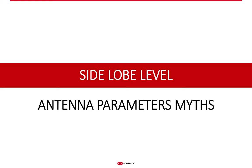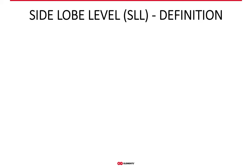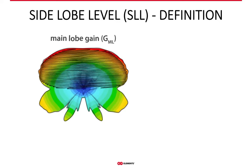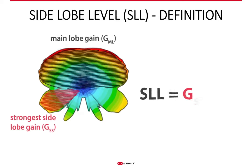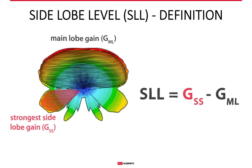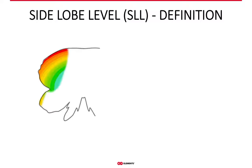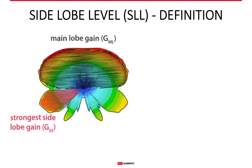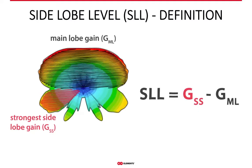Another parameter worth mentioning is side lobe level. In practical life, its effect is similar to that of front-to-back ratio. Side lobe level is the difference between the gain of the strongest side lobe and the main lobe. It is more useful than front-to-back ratio because it at least points out the strongest side lobe, which says a bit about antenna performance in high noise areas — but just a little bit really.